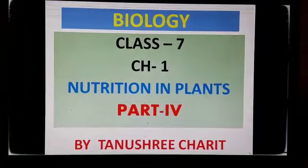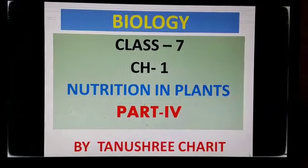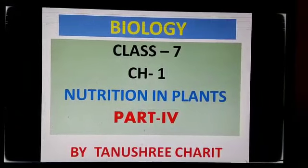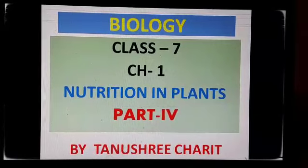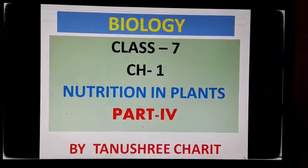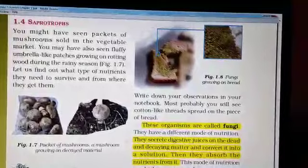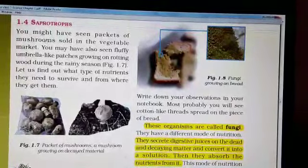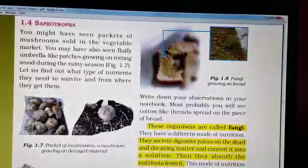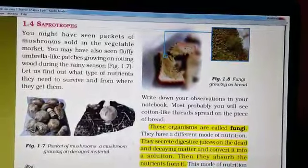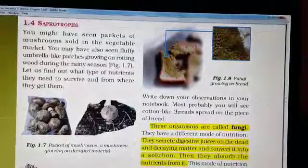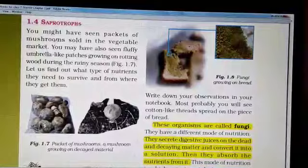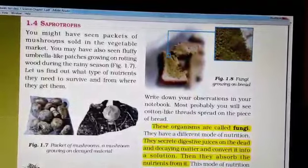In my last video I discussed about two types of heterotrophic mode of nutrition — parasitic and insectivorous plants. Today I will discuss about saprotrophs. You might have seen packets of mushrooms sold in the vegetable market, and fluffy umbrella-like patches growing on rotting wood during the rainy season. Let us find out what type of nutrients they need to survive and from where they get them.